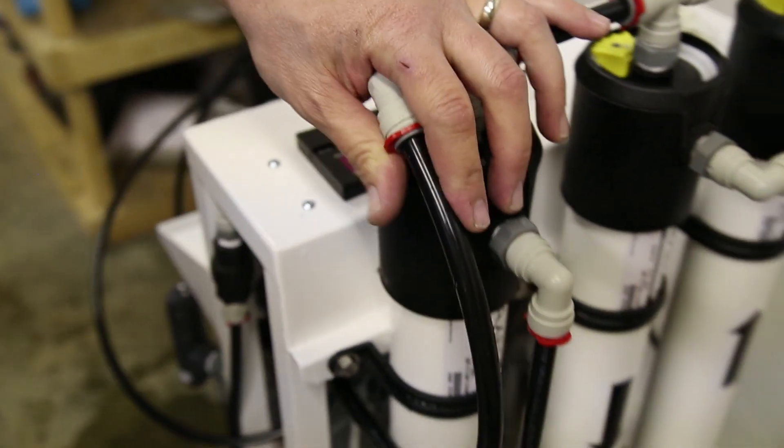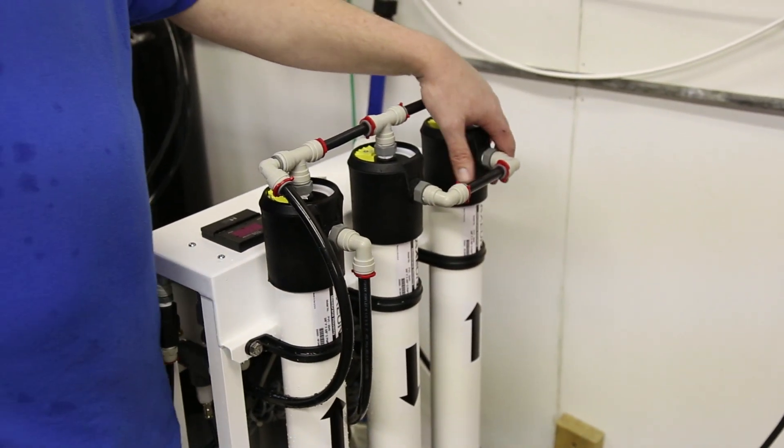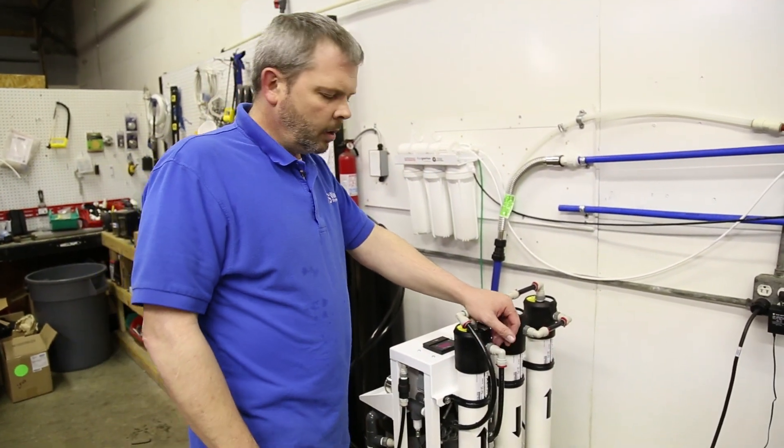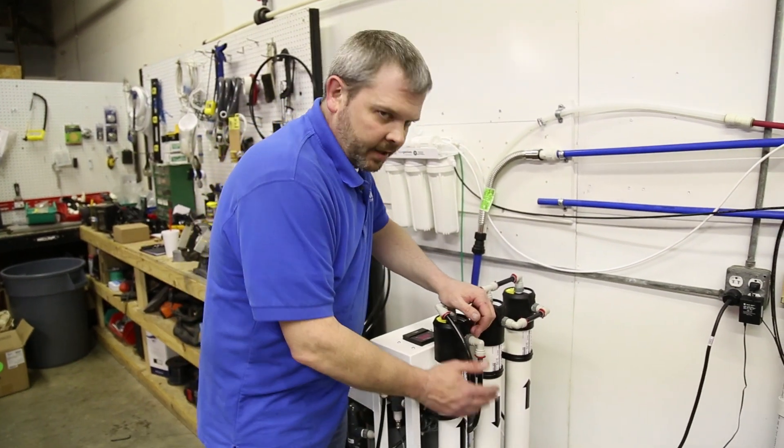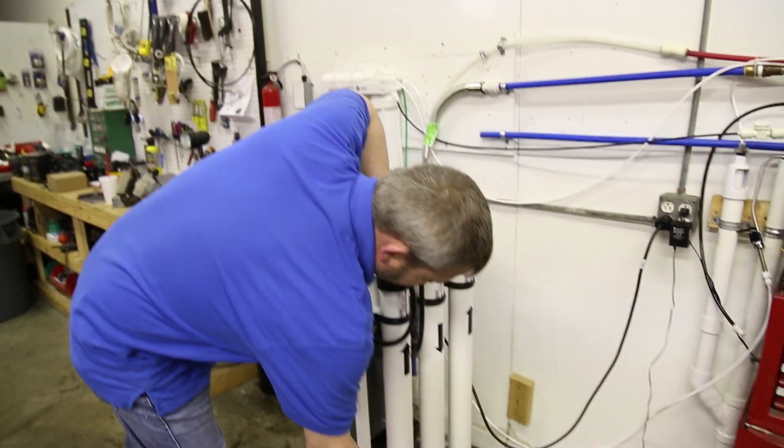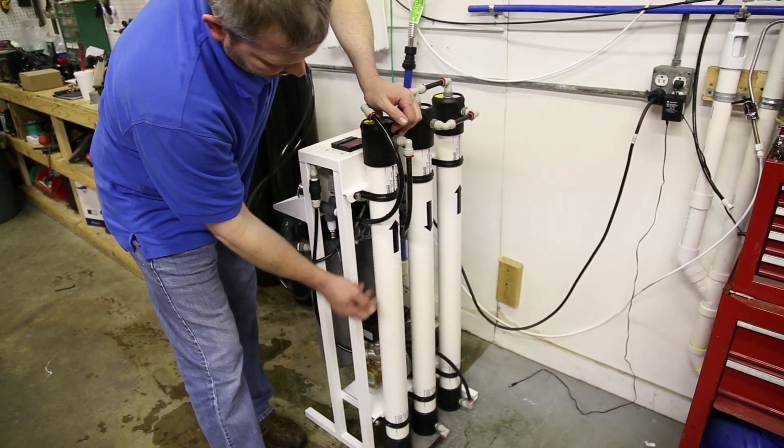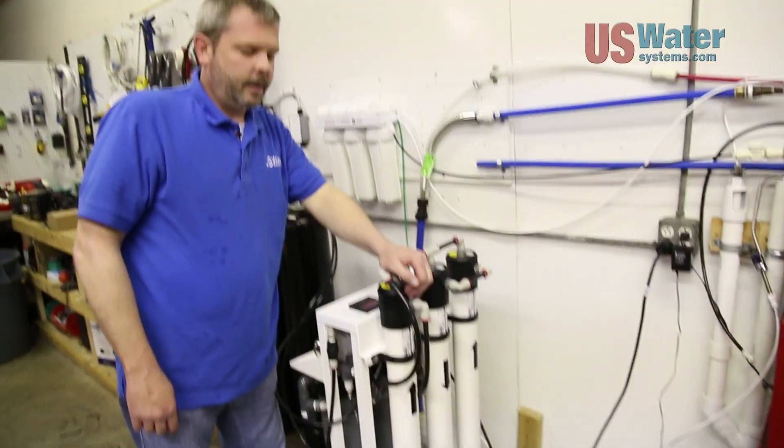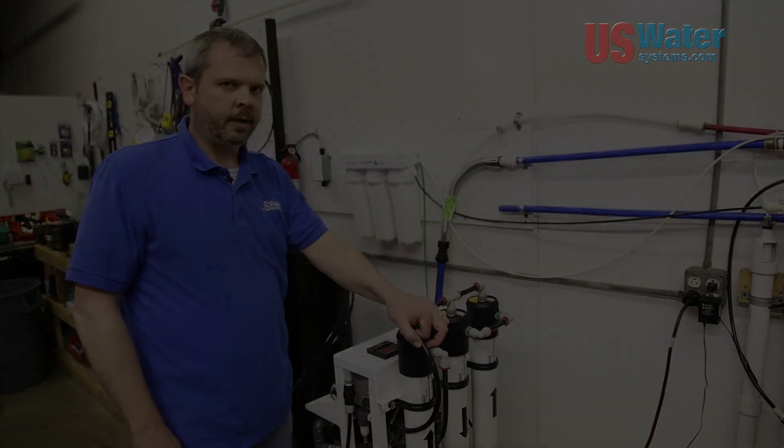Now once this is done, you basically would repeat that for each membrane. Then you'll go through the complete start-up process again. You're going to treat this as a new install and go completely through the start-up process. But keep in mind, there's a proper way to put the membranes in. The skirt seal should always be on the feed side of the membrane housing. This is the commercial membrane change for US Water Systems, thanks.